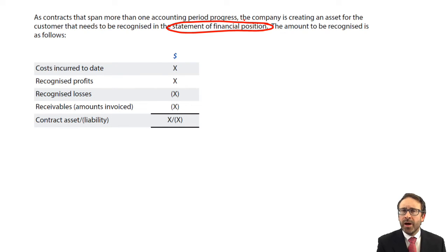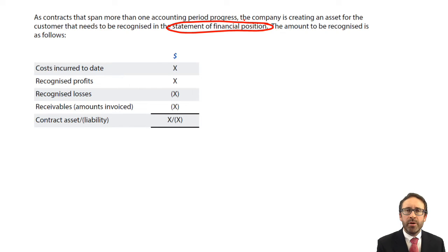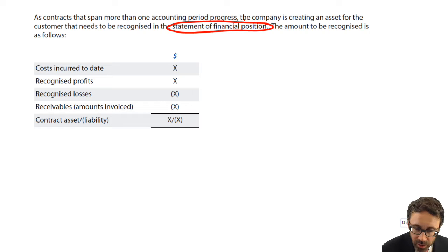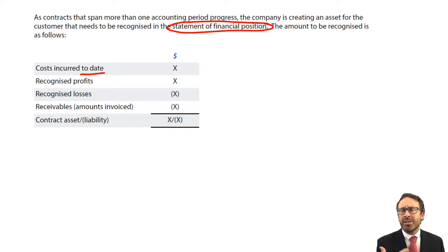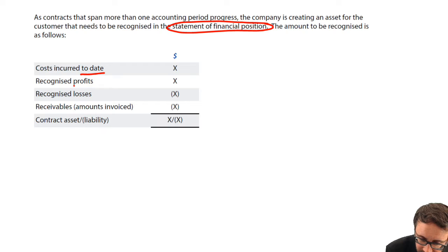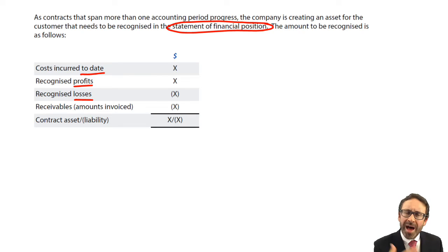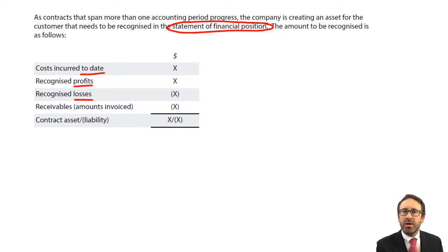It's pretty straightforward, and the key thing is that you need to use the figures from other parts of any question. You start with your costs to date — as you incur labour and materials, that's what's physically making your asset grow. However, don't forget you're looking to sell that asset, so it's worth more than the costs incurred. You add on any recognised profits to date, or deduct any losses — it will be one or the other at that point in time.